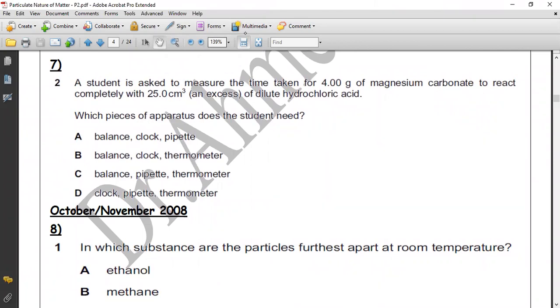Question seven. A student is asked to measure time - time means clock, we use clock - for four grams of magnesium carbonate, so we need balance, to react completely with 25 cubic centimeter - we need pipette. No part of this experiment needs thermometer. And as we can see, thermometer is present in B, C, and D. So the correct answer will be A. Here balance and clock. No pipette here, no clock there. So the correct answer will be A.